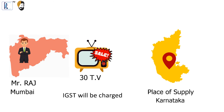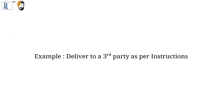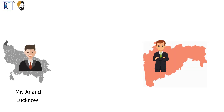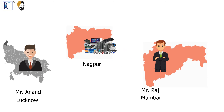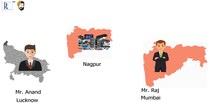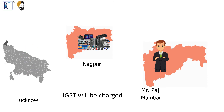Example — deliver to a third party as per instructions: Mr. Anand in Lucknow buys goods from Mr. Raj in Mumbai, Maharashtra. The buyer requests the seller to send the goods to Nagpur, Maharashtra. In this case, it will be assumed that the buyer in Lucknow has received the goods, and IGST will be charged.